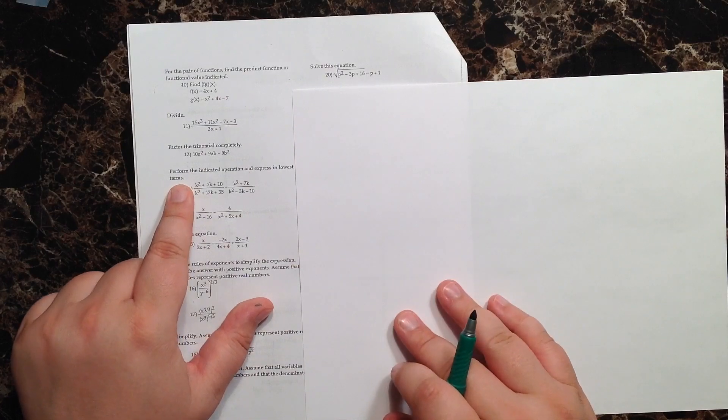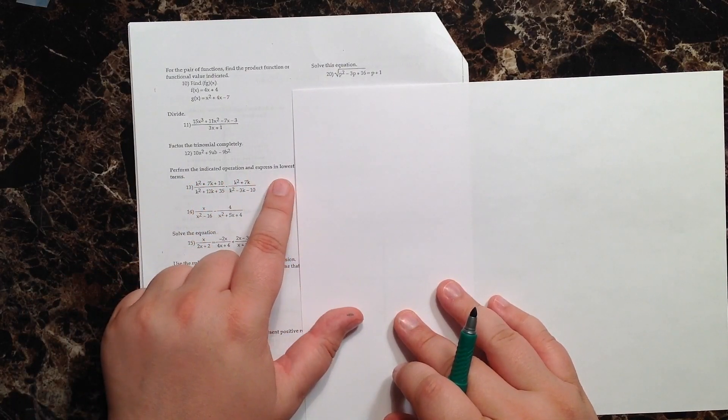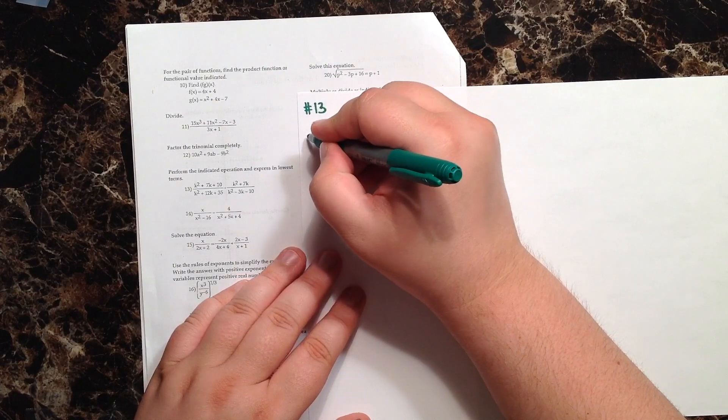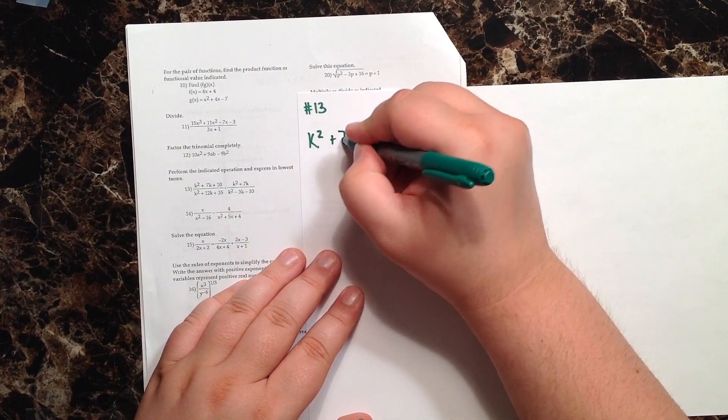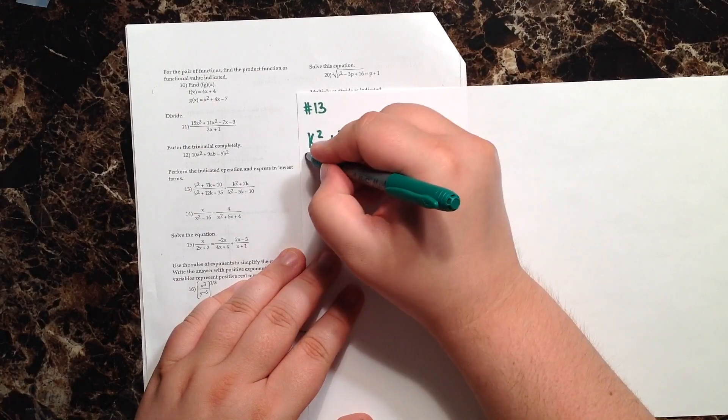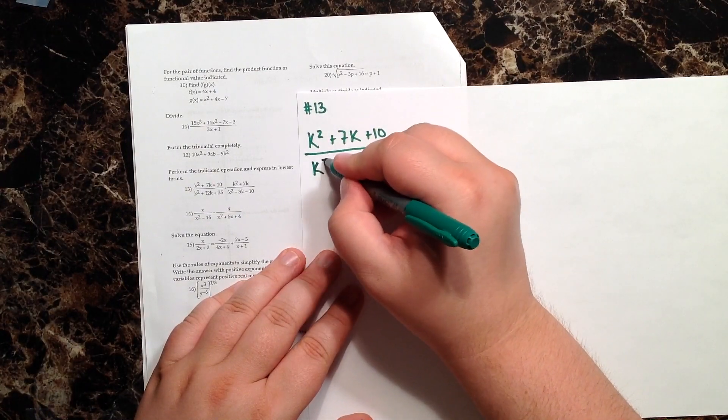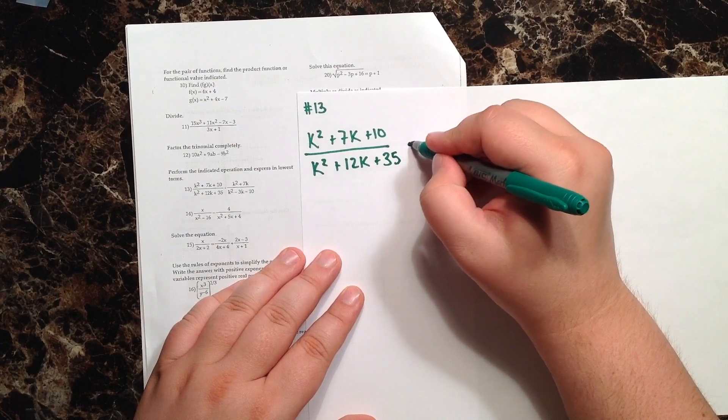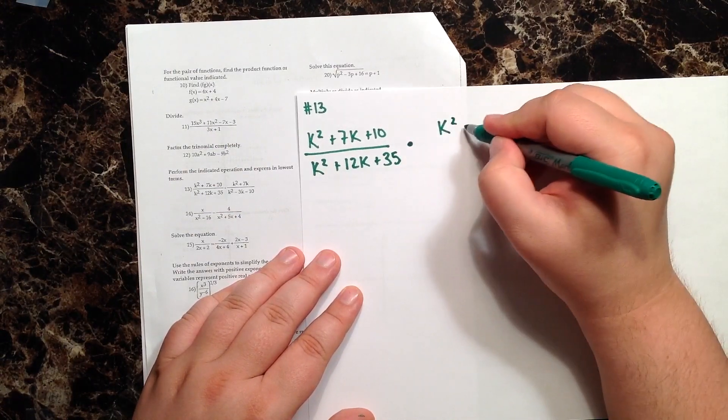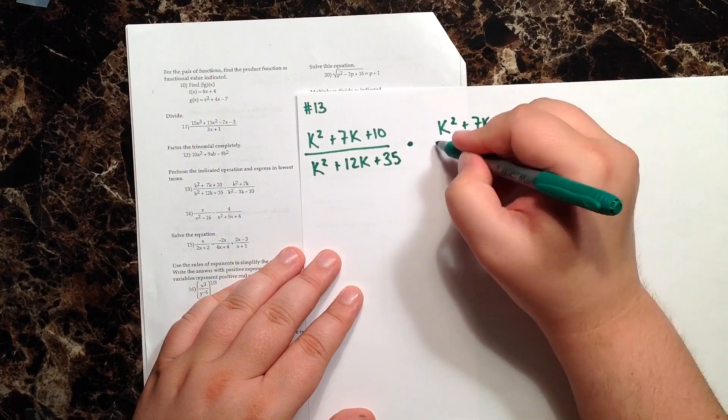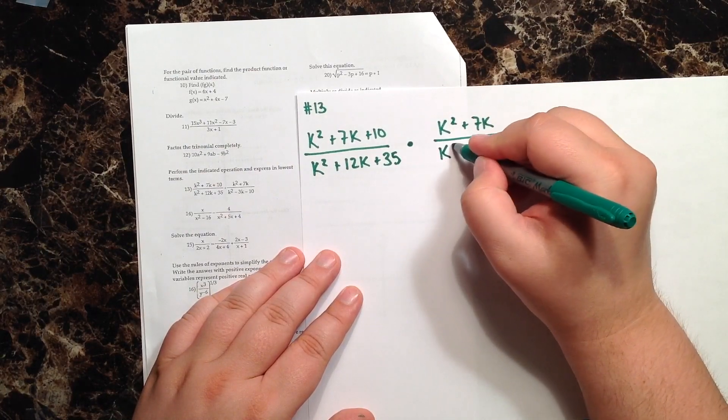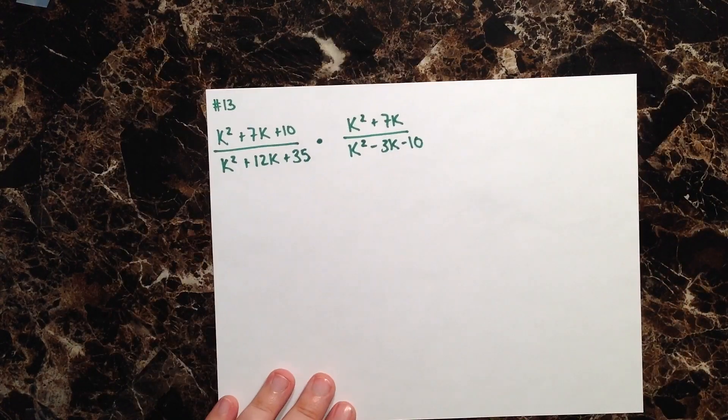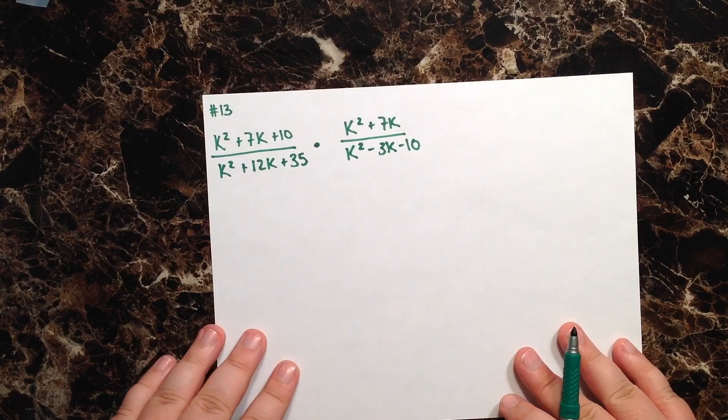The directions for number 13 are to perform the indicated operation and express in lowest terms. They give me k-squared plus 7k plus 10 over k-squared plus 12k plus 35 times k-squared plus 7k over k-squared minus 3k minus 10. We'll set that aside and work on what they've given us.